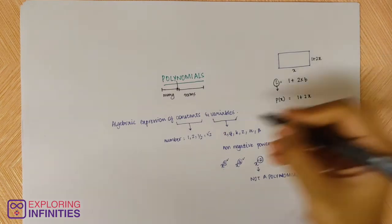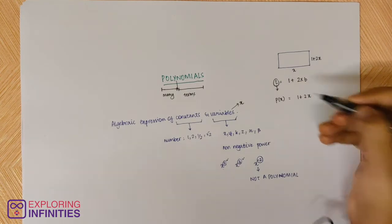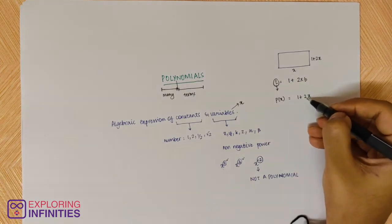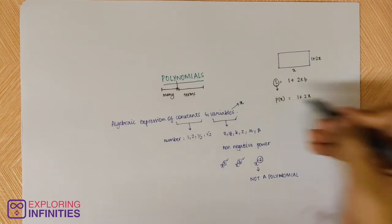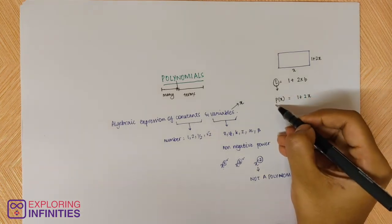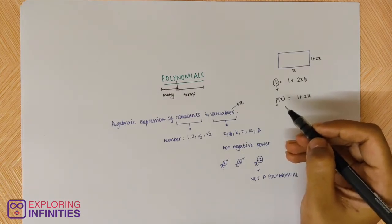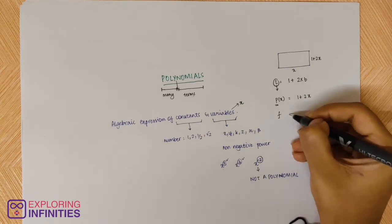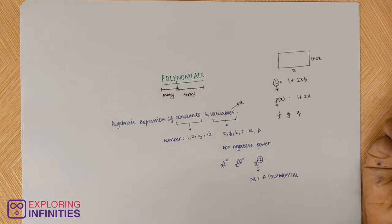We gave a variable for the breadth, calling it x, and said that length can be written as 1 more than 2 times its breadth, that is 1 + 2x. What does p(x) mean? p is just like a name — instead of p, you can say f or g or q or anything for that matter.